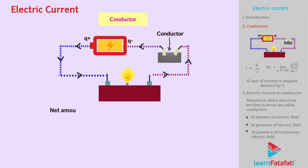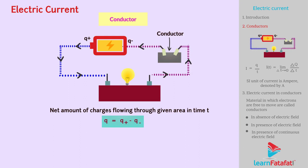Hence, the net amount of charges flowing through a given area in time t will be Q equals Q+ minus Q-.